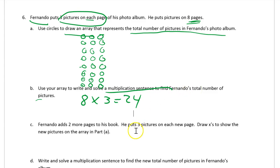And now we have C. Fernando adds two more pages to his book. He puts three pictures on each new page. Two more pages, three pictures on each page. Draw Xs to show the new pictures in the array in part A. So I'm going to add, I don't have any room to do this, so I'm going to have to go up into the words for the question. I need two more pages, that's two more rows of three. One, two, three, one, two, three. There. Draw Xs to show. Done.